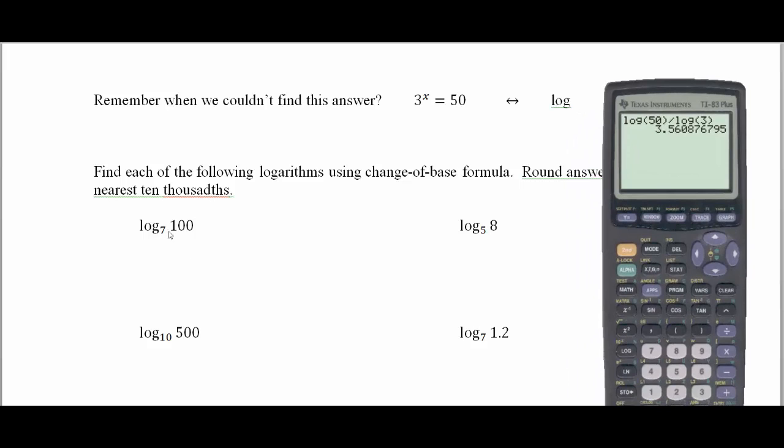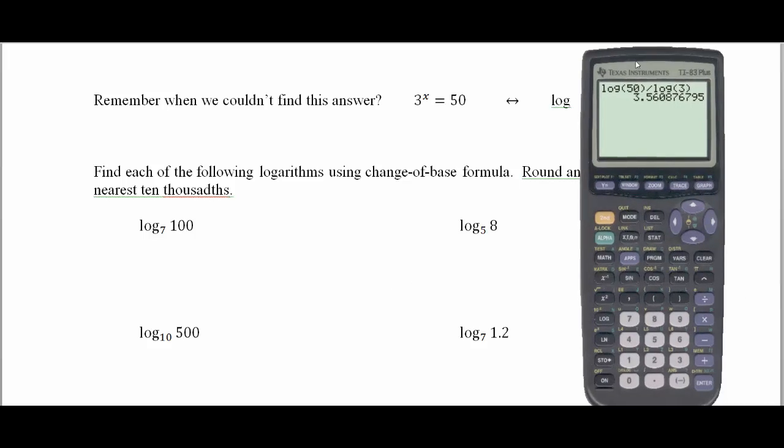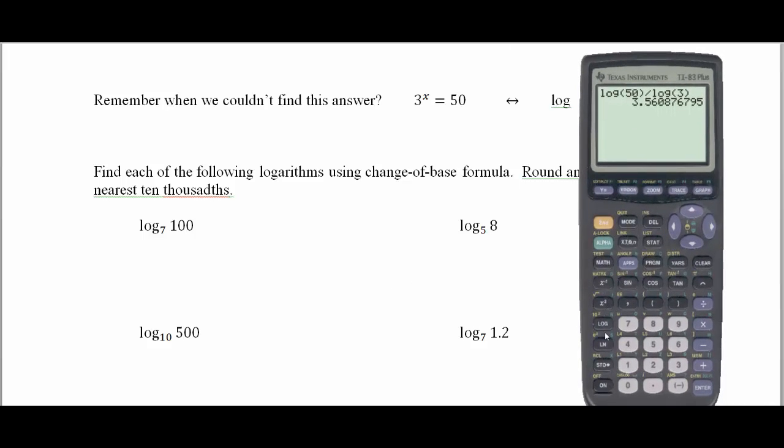If I'm trying to find when the base of 7 hits 100, I'm going to guess that it's between 2 and 3. Because 7 squared is 49, and 7 cubed is going to be more than 100. So, I'm going to go log 100 divided by log 7. And that gives me an answer of, my guess was right, it's going to be 2 and 3,666 ten-thousandths, since we want to go to the nearest ten-thousandths here.